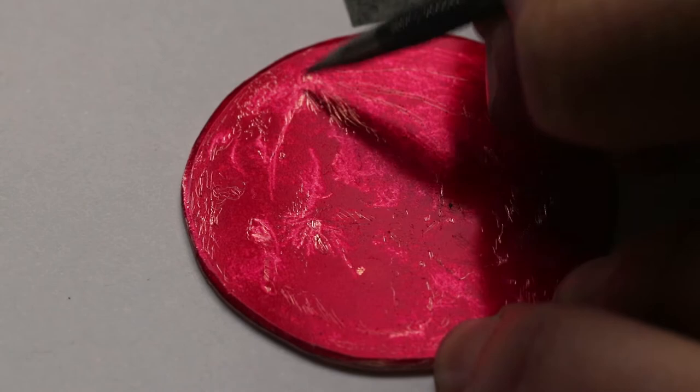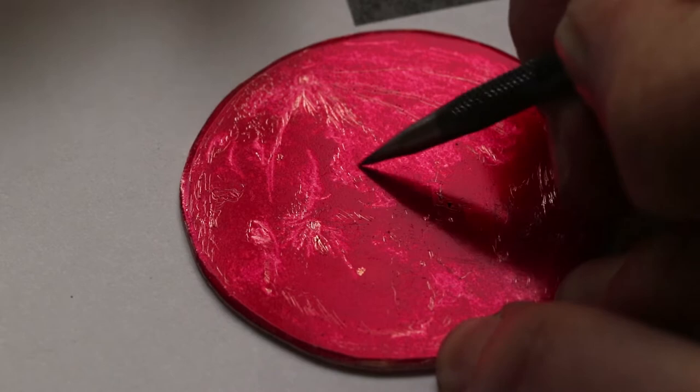Once the plate is etched and the ground removed, the process is the same as printing a normal etching.